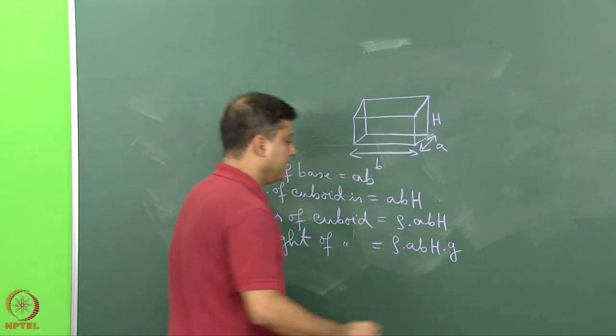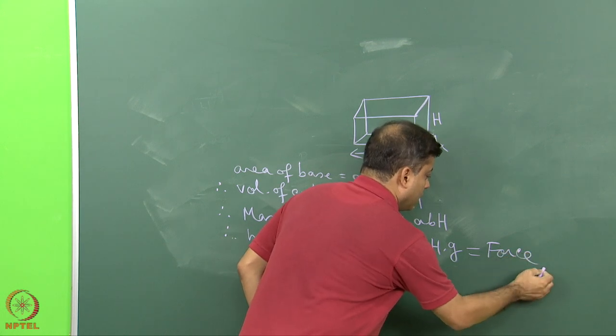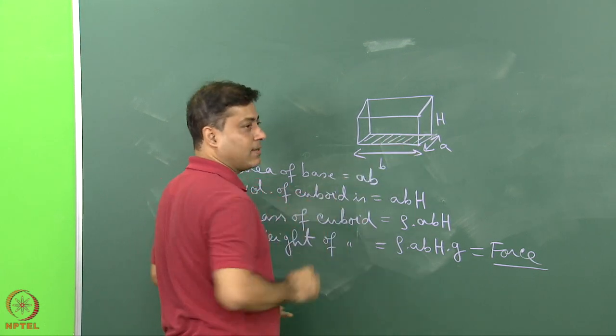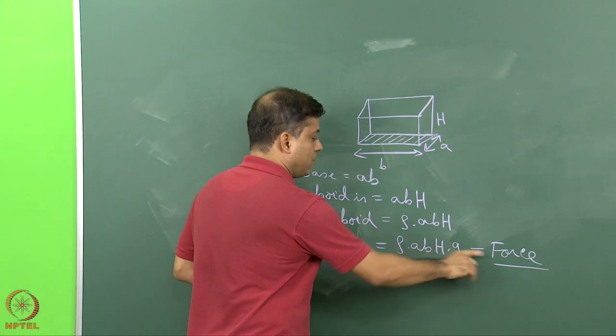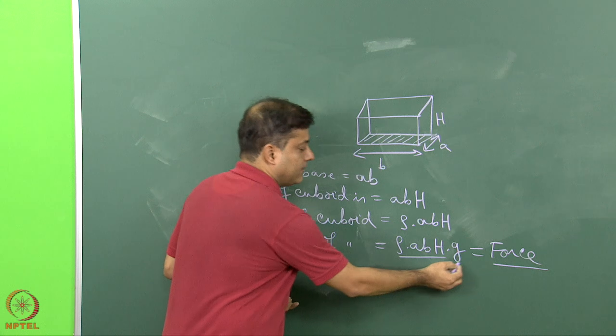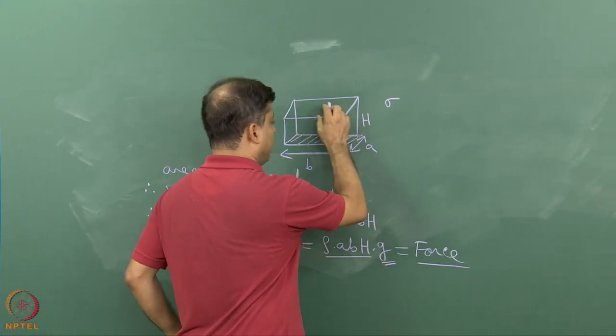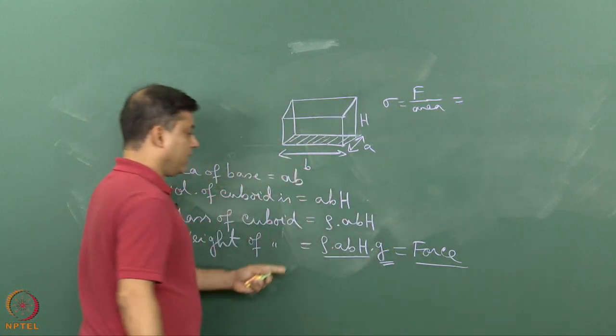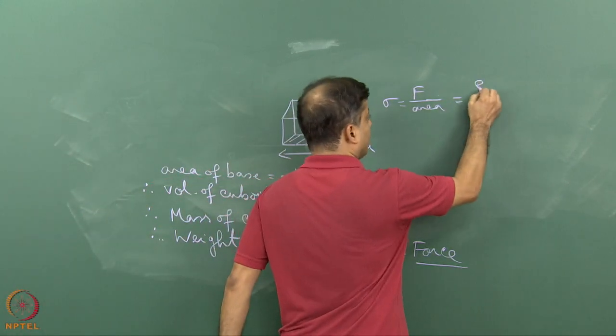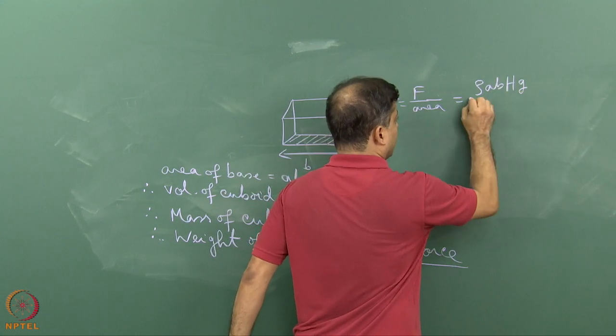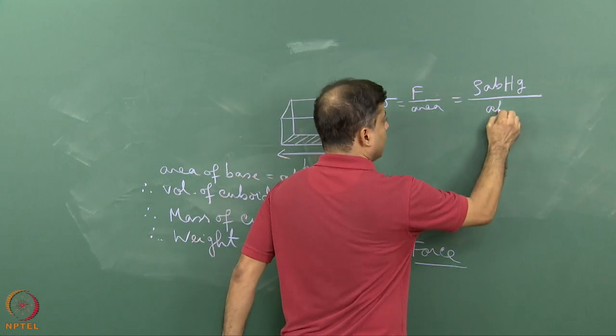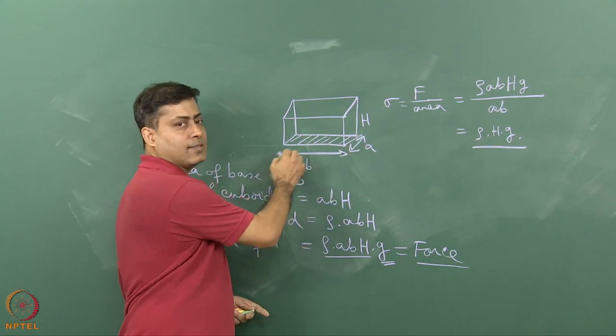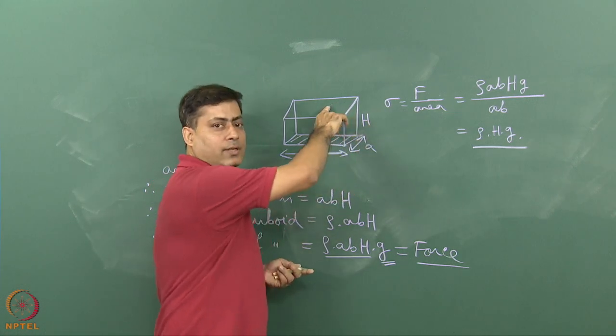This is the force that acts due to its own weight on this horizontal base surface. Force equals mass into acceleration. Now stress exerted by this body on the horizontal surface is given by force per unit area. From here I can write rho ABH g divided by the basal area AB, which equals rho into H into g. So the basal geometry does not come into picture when we calculate the stress exerted by the body due to its own weight.